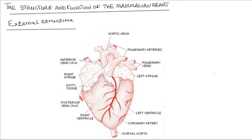The mammalian heart is a muscular organ located in the chest cavity, between the two lungs in the thoracic cavity. The primary function of the heart is to pump blood to the whole body. In order to understand how the heart is adapted to this function, we look at the structural features, starting with the external structures.